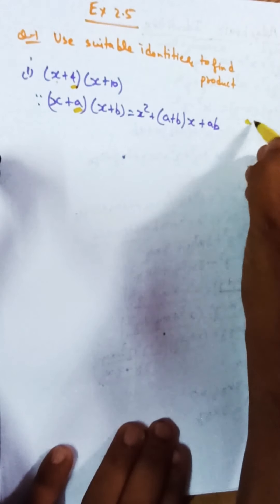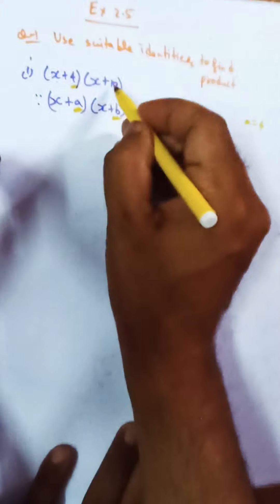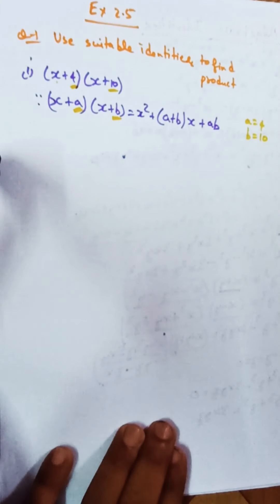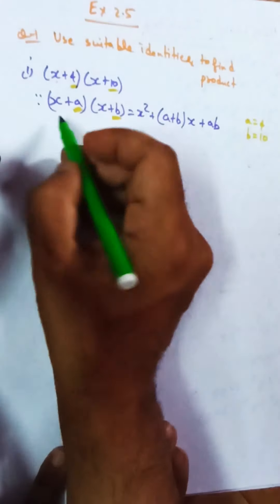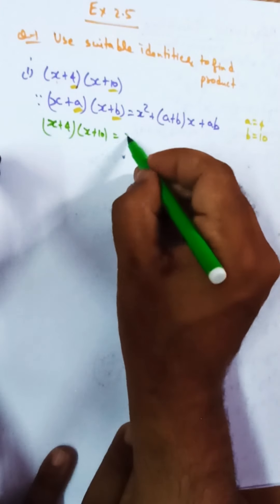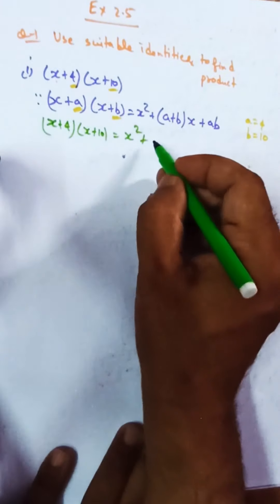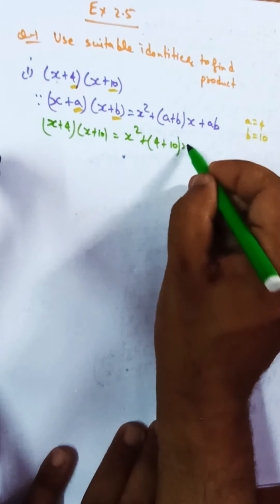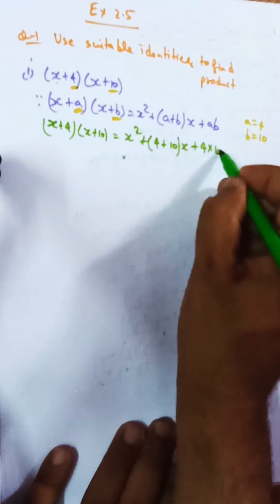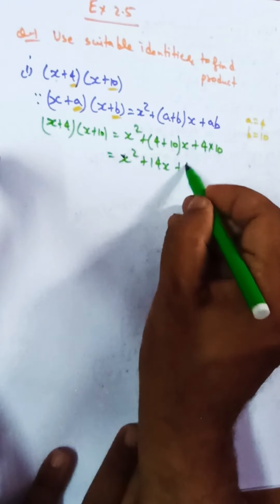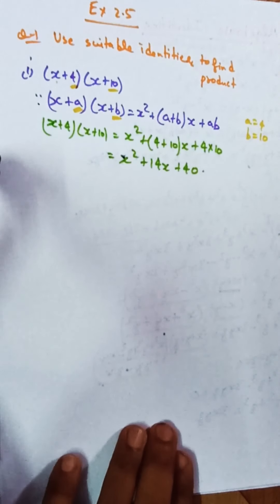Comparing, x corresponds to x, a corresponds to 4, so a=4 and b=10. So (x+4)(x+10) = x² + (a+b)x + ab = x² + (4+10)x + (4×10) = x² + 14x + 40. Hope it is clear. Now we move to the second part.